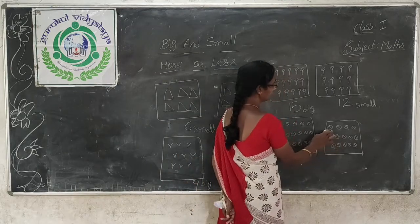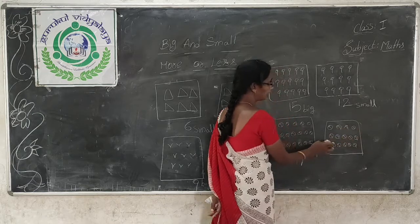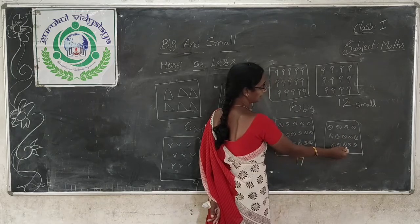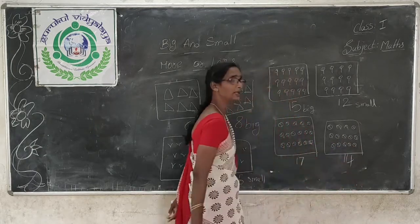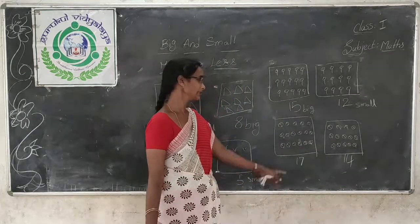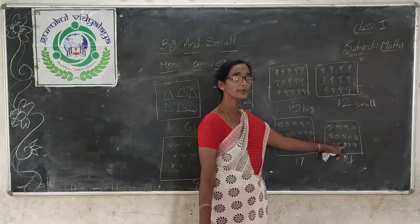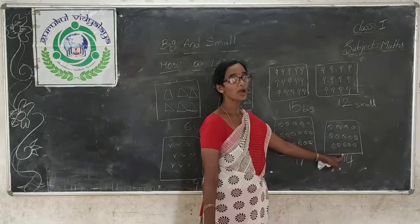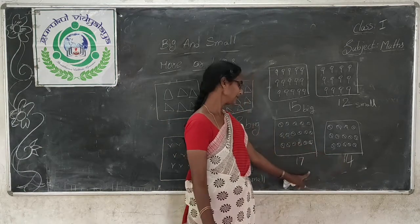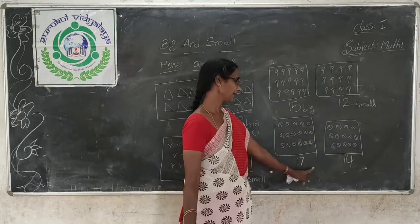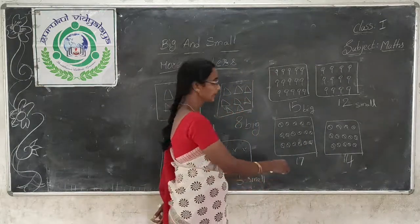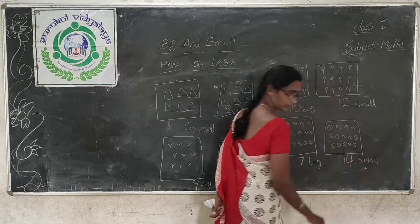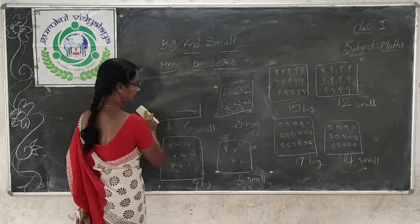And how many marbles are there in this group? Let's count: 1, 2, 3, 4, 5, 6, 7, 8, 9, 10, 11, 12, 13, 14. So 14 marbles are there. Which group has more marbles? This group has more marbles and this group has less marbles. This group has big number of marbles and this group has small number of marbles. That means 17 is the big number and 14 is the small number.